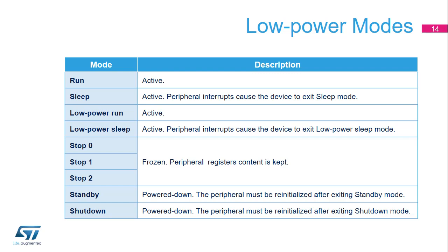The Octo SPI is active in run, sleep, low power run, and low power sleep mode. An Octo SPI interrupt can cause the device to exit sleep or low power sleep mode. In stop zero, stop one, or stop two mode, the Octo SPI is frozen and its register contents are maintained. In standby or shutdown mode, the Octo SPI is powered down and must be initialized afterward.